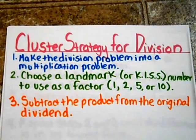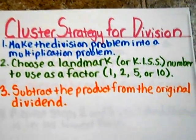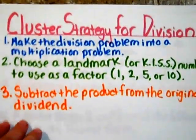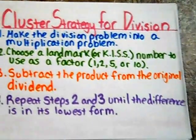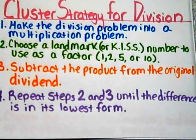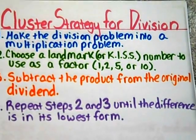Step number three will have the student subtract the product from the original dividend. Step four is to repeat steps two and three until the difference is in its lowest form.